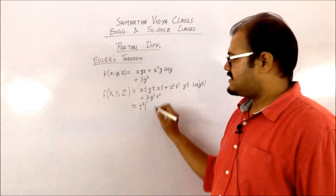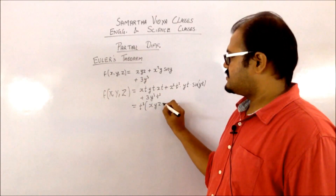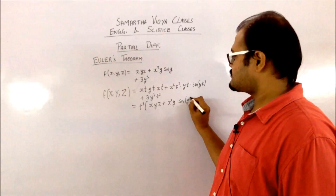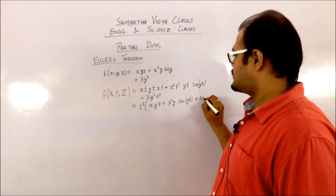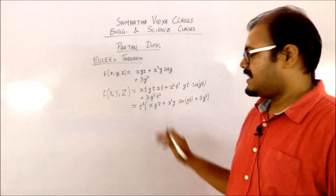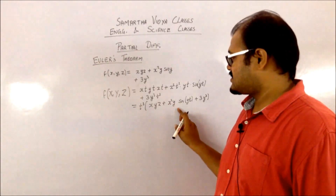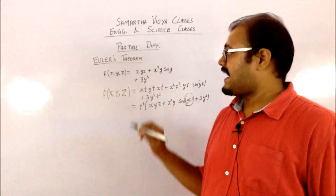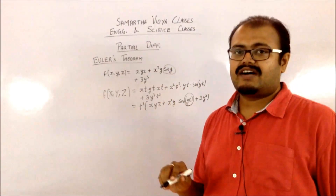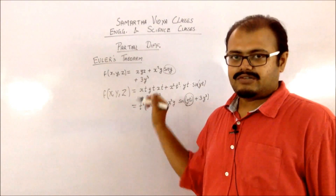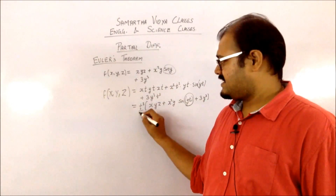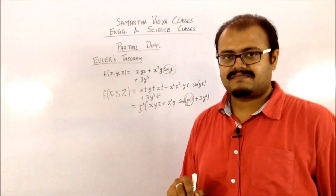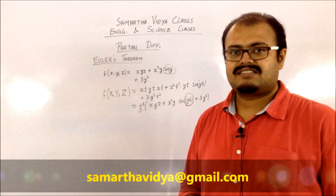Taking t cube common, inside the terms you are getting x·y·z plus x square·y·sin(y·t) plus 3y cube. Now you can see that it is not your original function, because you are having y·t present inside the sin, whereas your original function had just sin(y). That is why you are not getting your original function even after taking t cube out. So this particular function is a non-homogeneous function.